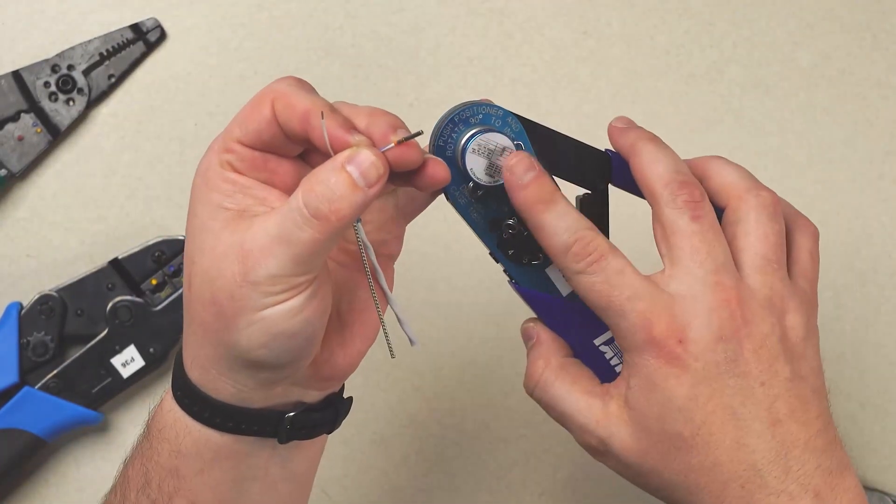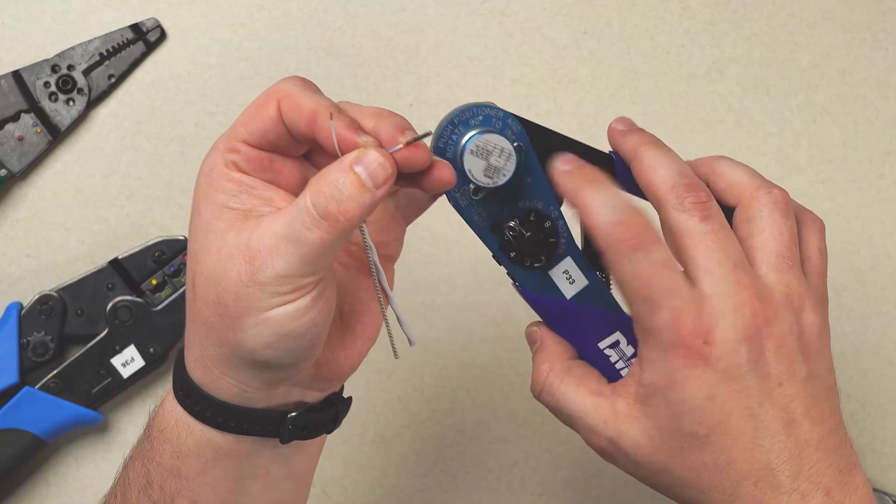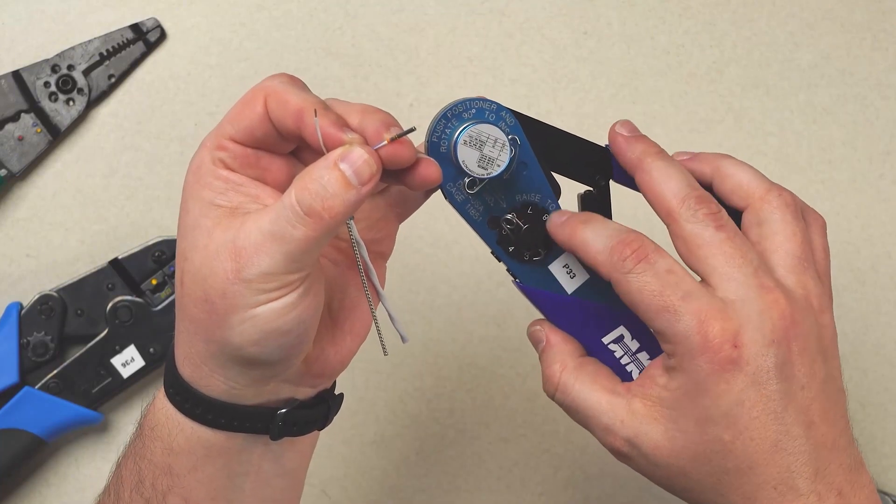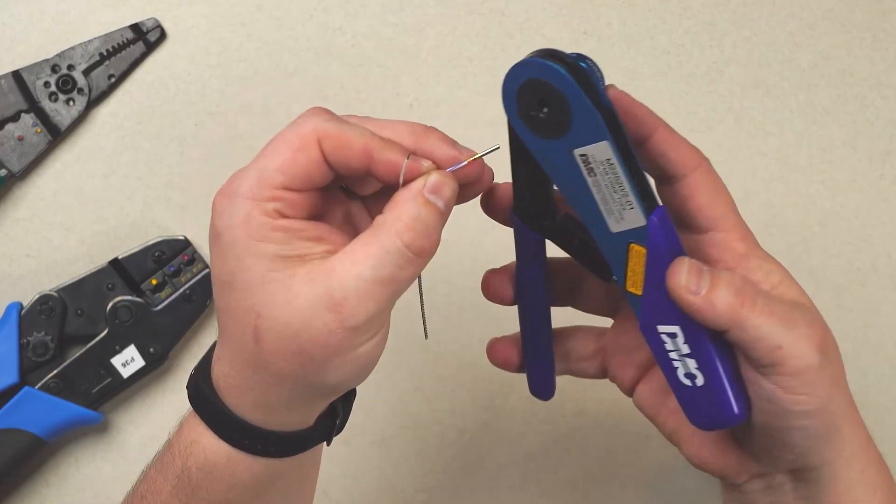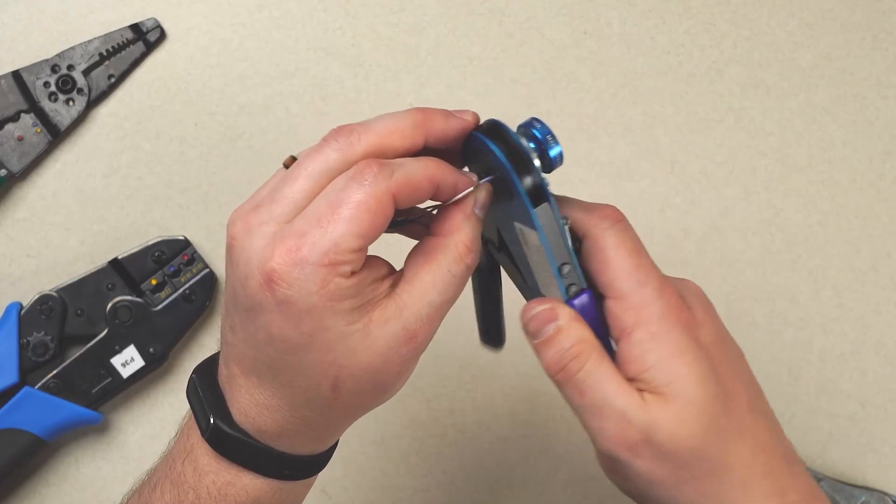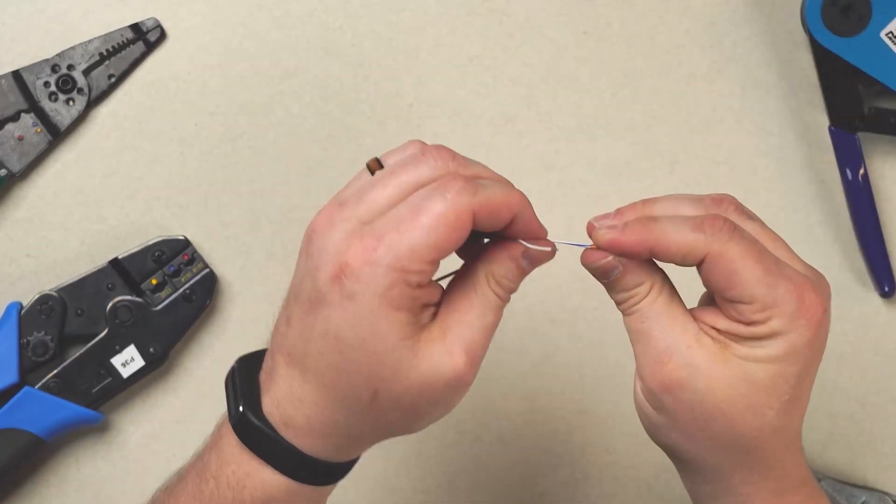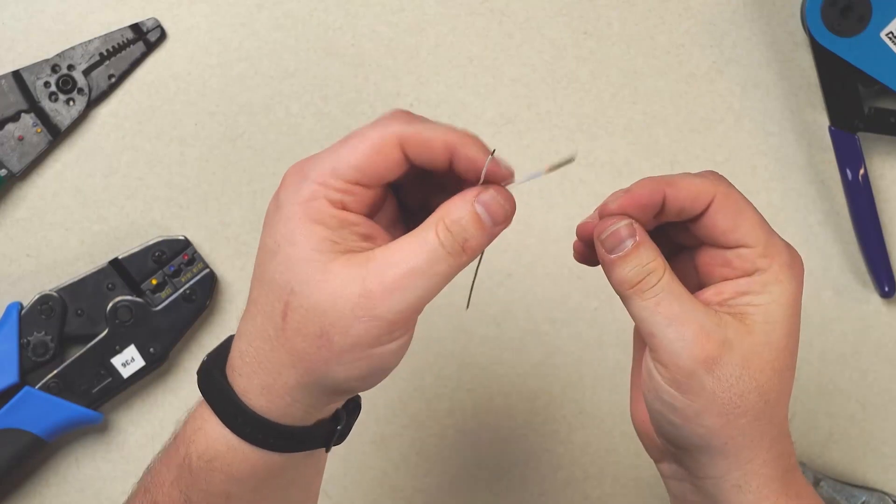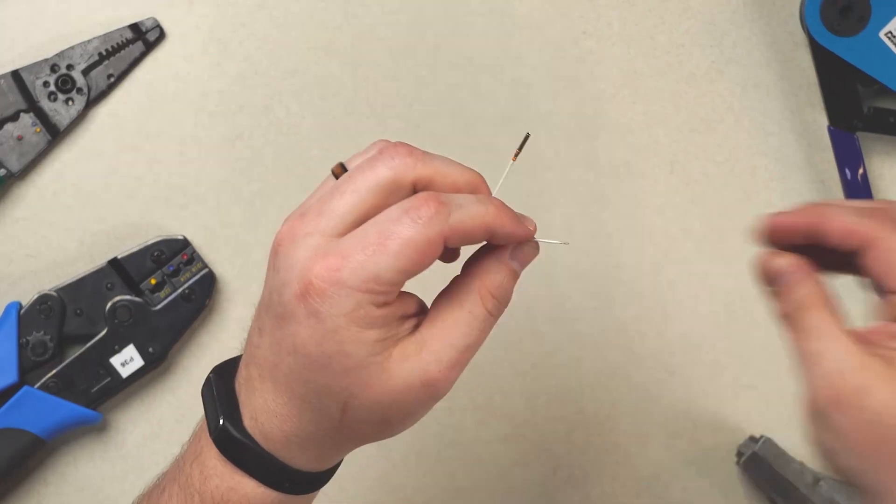We're going to make sure we've got our proper positioner and use this chart on the back here to make sure we set to the proper crimp dimension. Insert the assembly into the crimper tool. And establish the wire, give it a tug, make sure it's all driven home correctly.